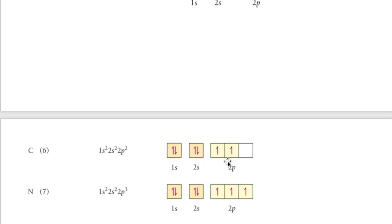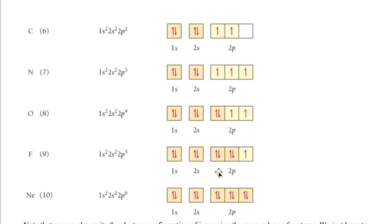This is a common confusion for students, because many only look at the last orbital. Remember that valence electrons are all electrons in the valence shell — the largest or outermost shell. For fluorine, the second shell is still the valence shell, giving a total of seven valence electrons.